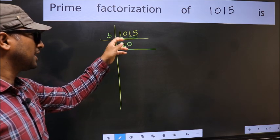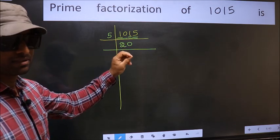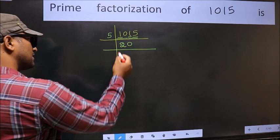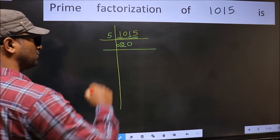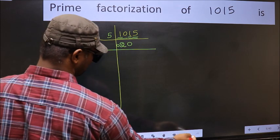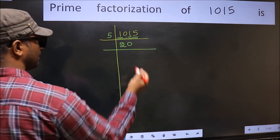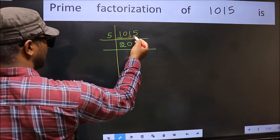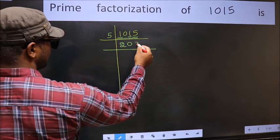At the start also I had taken 2 numbers, but 0 at the start is of no use. So, I did not write 0 at the start. Next, 15. When do we get 15 in 5 table? 5 times 3 is 15.